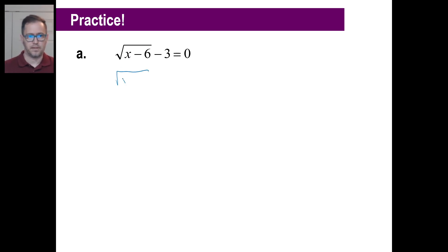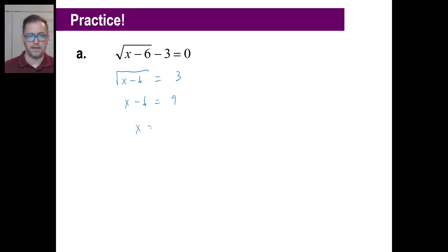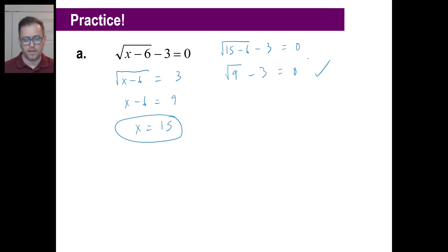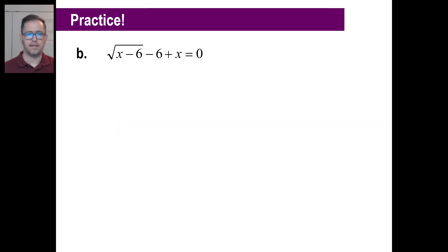Practice problem A: the square root of x minus 6 minus 3 equals 0. Move the 3 over and square both sides: x minus 6 equals 9, so x equals 15. Checking: the square root of 15 minus 6 minus 3 equals the square root of 9 minus 3 equals 3 minus 3 equals 0. That works.